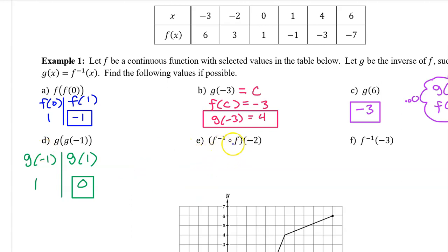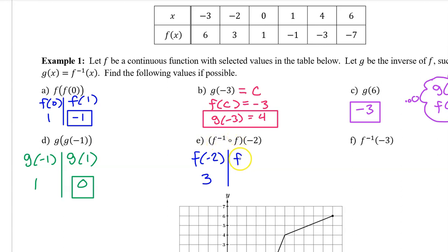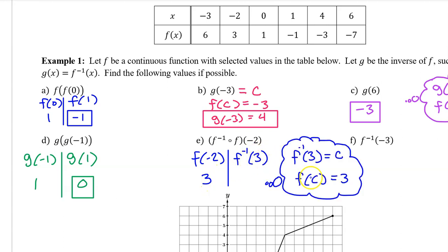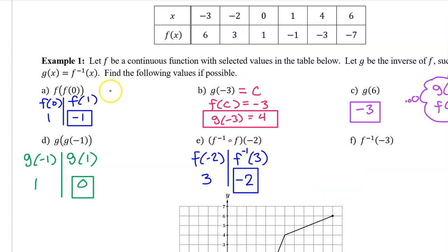Part E: for this open circle notation, we work from right to left. So first we need to find f at negative 2. f at negative 2 is 3. Moving to the left, we now need to evaluate f inverse at 3. f inverse at 3 will equal c if and only if f at c equals 3. So f at what is equal to 3? That's negative 2. That's the answer.